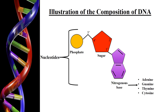DNA exists in the form of a double helix where the two strands of the DNA are intertwined into each other and connected via bridges. Just like a spiral staircase where the two sides are intertwined into each other and in between they are connected with the help of stairs.